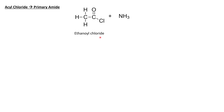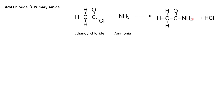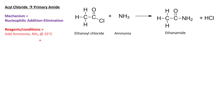Acyl chlorides can be converted to primary amides. Take this acyl chloride, ethanoyl chloride, and react it with ammonia. This will produce a primary amide — the amide functional group contains a carbonyl directly bonded to a nitrogen atom. This is called a primary amide because there are no carbon chains or alkyl groups bonded to the nitrogen. The product is ethanamide, and we also form hydrogen chloride fumes as a byproduct. The mechanism is nucleophilic addition elimination. All you need to do is add ammonia to your acyl chloride, and this reaction will occur at room temperature.